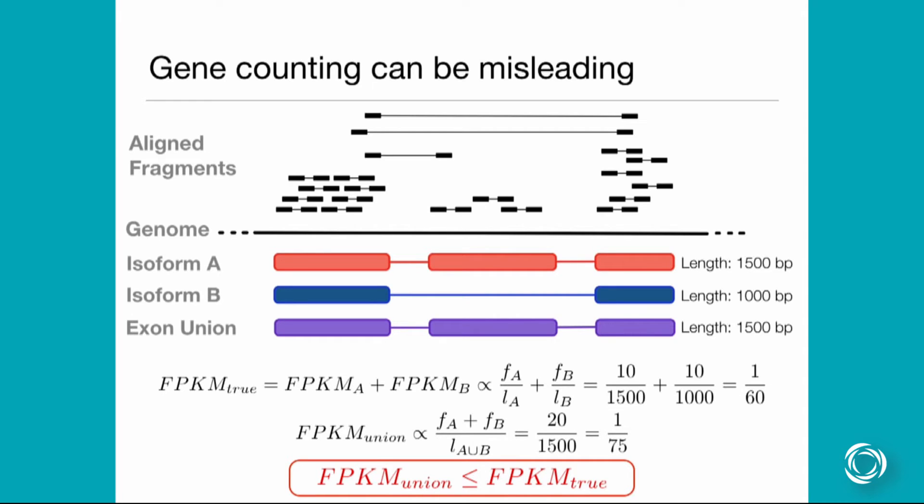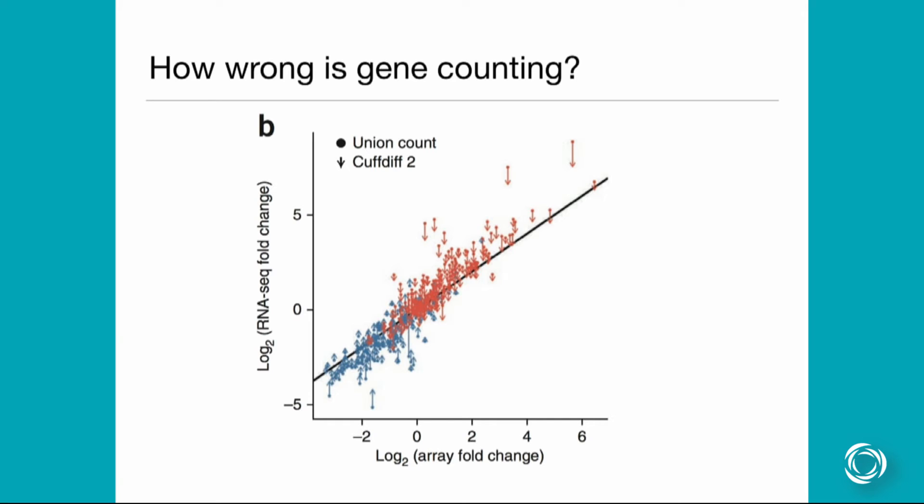How wrong is gene counting? This is something that people are still arguing about right now. This is also from the Cuffdiff 2 paper. They basically took a bunch of experiments using this HOX1A knockdown with some scrambled knockdowns as the control, and then they showed that Cuffdiff 2 is actually more concordant with microarrays. You could make of that what you will, but it's really hard to make a good benchmark of how wrong this estimate is. One reason is we haven't seen that yet. But this is sort of the Cuffdiff 2 attempt where they took a bunch of microarrays and tried to actually see how much they differ using gene counting versus microarrays.